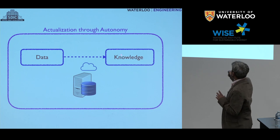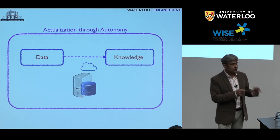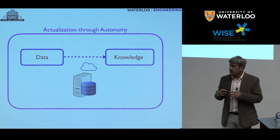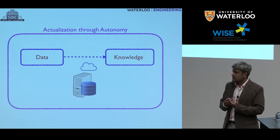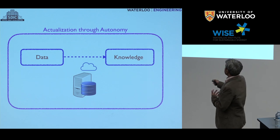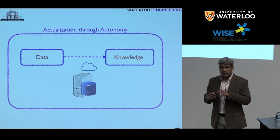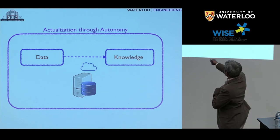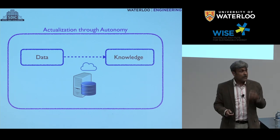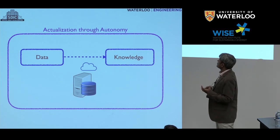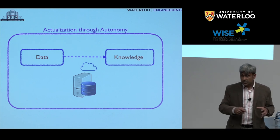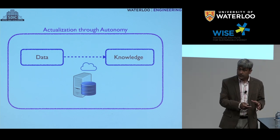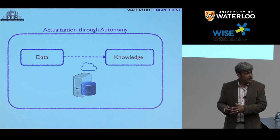To go from data to knowledge, you cannot work in the abstract. Some of the mathematical concepts can be done abstractly — the area of Bayesian analysis and Bayesian inference is very well developed. But if you want to go from data to knowledge, you cannot work in a vacuum. You have to look at a particular application and ask yourself: how do I go from this data to something actionable that I can work with? That is what I call actualization. Without actualization, a lot of IoT technologies are not going to be useful.